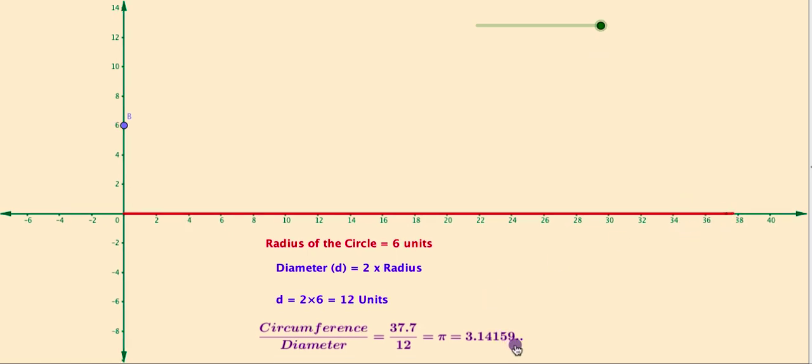This is how we can visualize the ratio of circumference to its diameter is always a constant, that is pi. Usually, we use the value of pi to calculate the area of circles and the area occupied by circular objects.